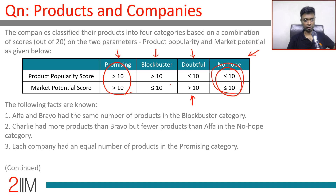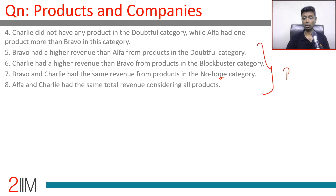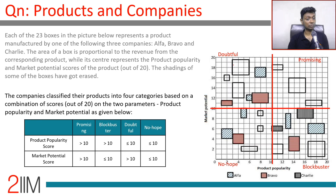Now the following facts are known. The first four facts talk about number of products in each category, and the next four talk about revenue. Let's solve the number of products first, then move to revenue. We've broken the chart into four quadrants: Doubtful, Promising, Blockbuster, and No Hope, with 10 as the cutoff for each axis.